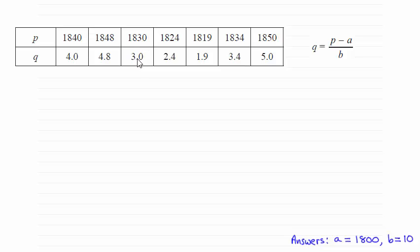So if we just use this one here when q is 3.0 and p is 1830. If I substitute those values into here then I've got 3.0 equals 1830 minus the constant a all divided by the constant b.